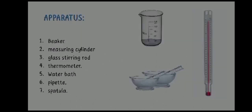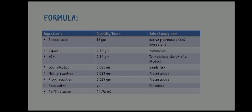The apparatus used for making the vanishing cream includes: beaker, measuring cylinder, glass stirring rod, thermometer, water bath, and spatula.